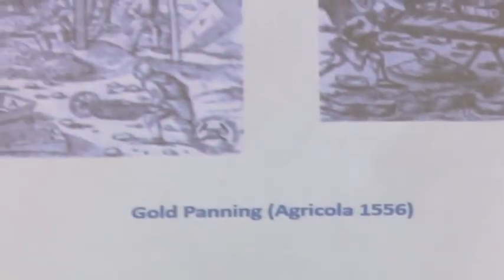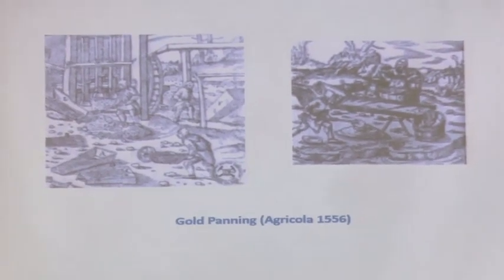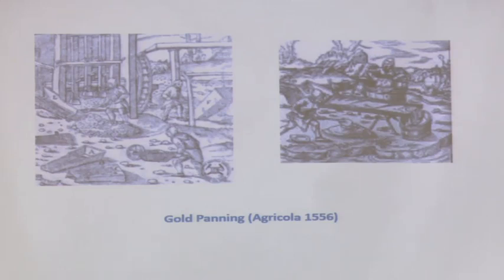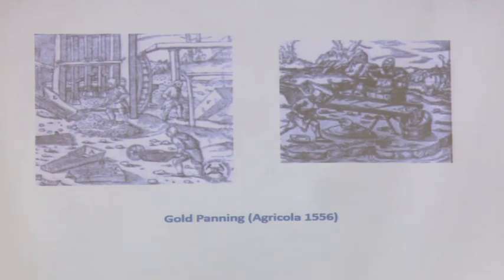Looking at the history of gravity concentration, there is a classic book, De Re Metallica by Agricola, written in 1556 — almost the first book in metallurgy, dealing with processing and metallurgical extraction. Pictures in that book clearly show that gravity concentration was practised at that time. Even today, tribes in the Bastar region use some form of gravity concentration without any formal training in fluid mechanics.